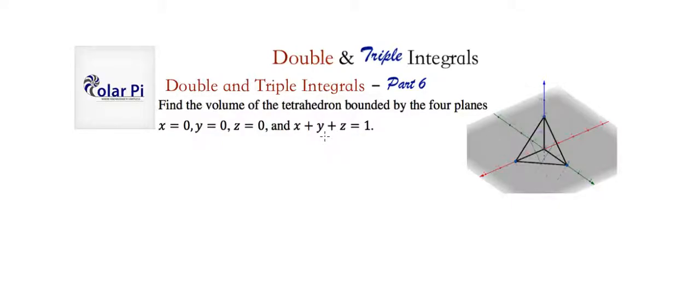If we're using double integrals, we have to write the double integral over some region D of z da. The region D is in the xy plane, and here it will be this right triangle in the bottom of our tetrahedron. So we do double integral over region D of z times da, where da is dy dx or dx dy, and we're going with dy dx.